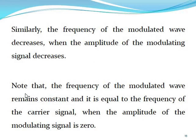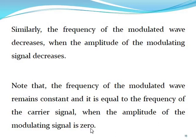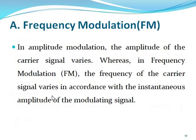The frequency of the modulated wave remains constant and is equal to the frequency of the carrier signal when the amplitude of the modulation signal is zero. If the amplitude modulation is zero, then frequency is constant. This is the importance: if the frequency modulation is constant, at that time the amplitude modulation signal is zero. This is the importance for the amplitude and frequency modulation.